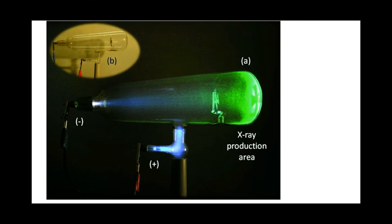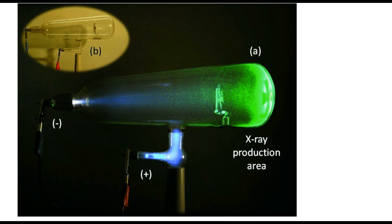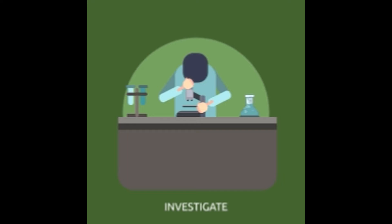Accidentally, he noticed a faint green glow in a screen away from the cardboard. He realized some invisible rays were coming from the tube and passing through the cardboard to make the screen glow. Röntgen threw himself into investigating this unknown ray.